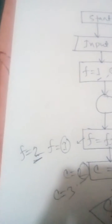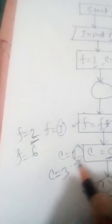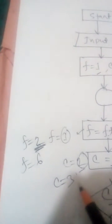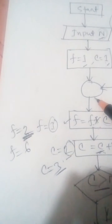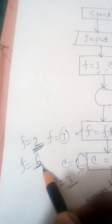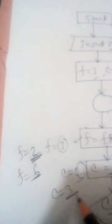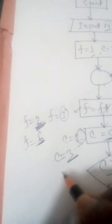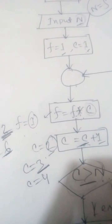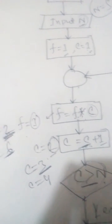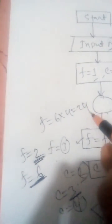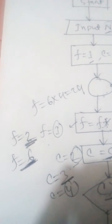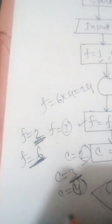Now f equals 2 and c equals 3, so f = 2 × 3 = 6. New f equals 6. Then c increments to c = 3 + 1 = 4. With c equals 4, the condition is still false, so we repeat again. Now f = 6 × 4 = 24. New f equals 24, and c increments by 1, so new c equals 5.